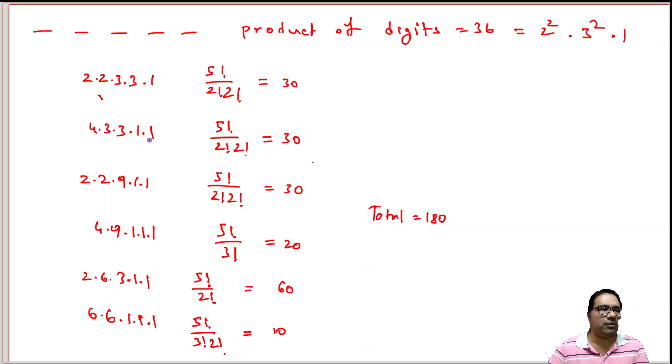Remaining 2 digits, we can put as 1. Or otherwise, we can combine both the 2s and both the 3s. That is 4 × 9. Remain 3 as ones.